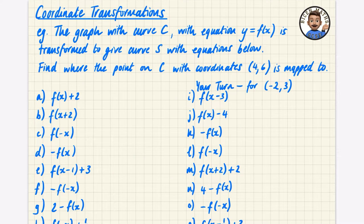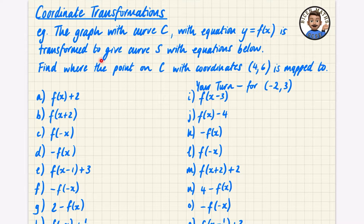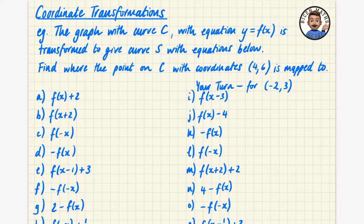In these questions we're not actually given a graph at all — we're just going to think about how the coordinates change. The best way to do this is to look at some examples. The graph of curve C with equation y = f(x) is transformed to give curve S. We need to find where the point on C with coordinates (4, 6) is mapped to.